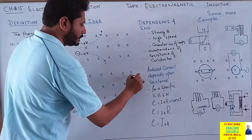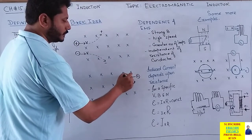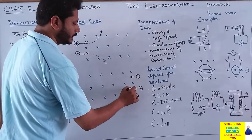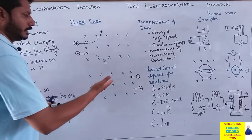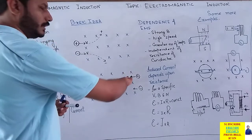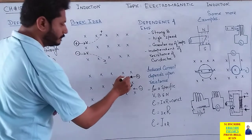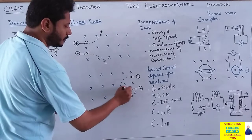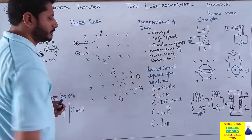Similarly اگر یہی positive charge opposite direction سے enter ہو اور یہی negative charge بھی opposite direction سے enter ہو تو: field into the page لیکن اب thumb opposite direction میں — positive charge deflect ہوگا downward direction میں، تو automatically negative charge deflect ہوگا upward direction میں۔ Now why I am teaching you these examples — just imagine۔